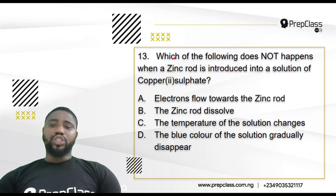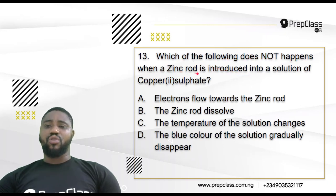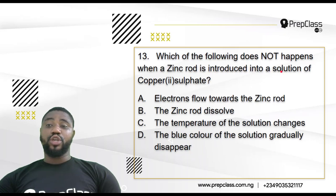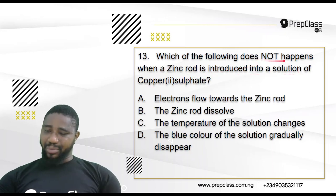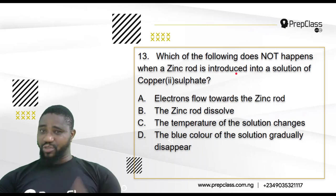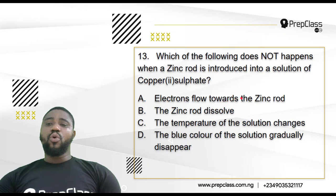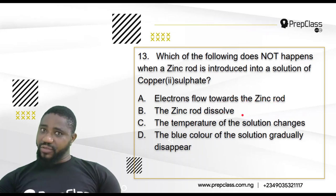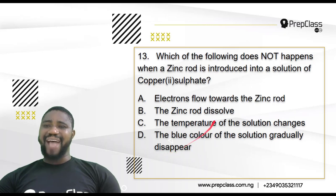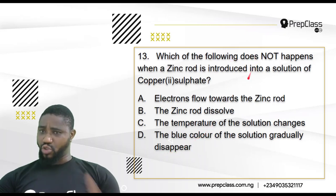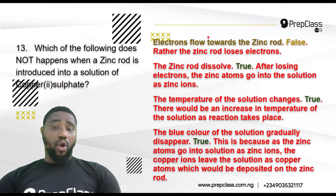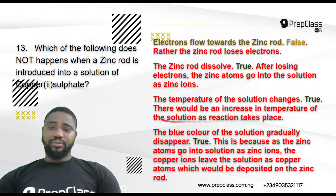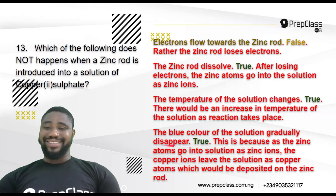Question 13: Which of the following does NOT happen when a zinc rod is introduced into a solution of copper sulfate? The options are: A — electrons flow towards the zinc rod; B — zinc rod dissolves; C — the temperature of the solution changes; D — the blue color of the solution gradually disappears. They are asking what does NOT happen. Let's analyze the options one by one.